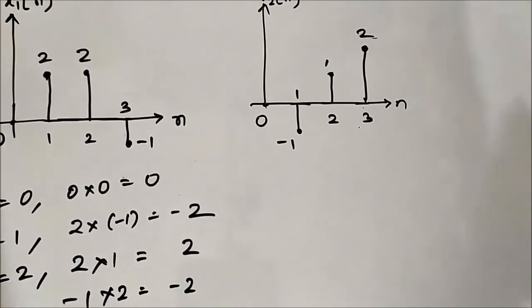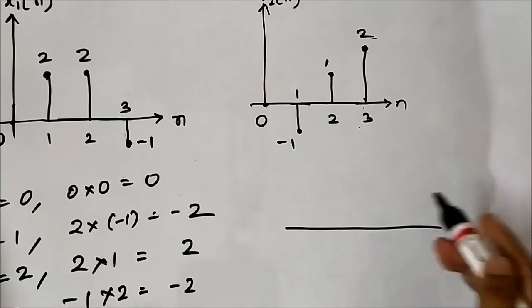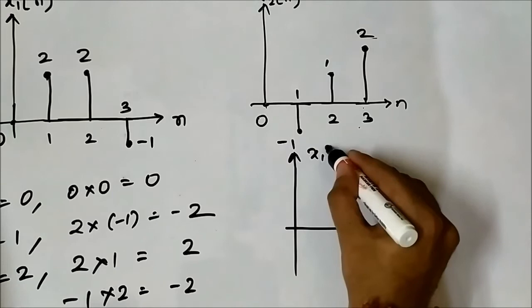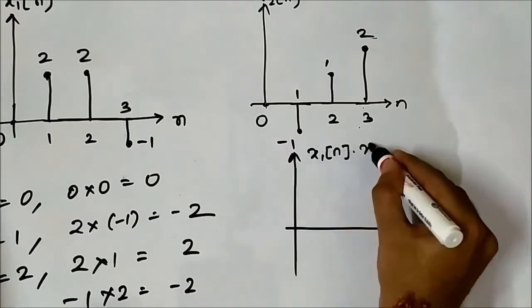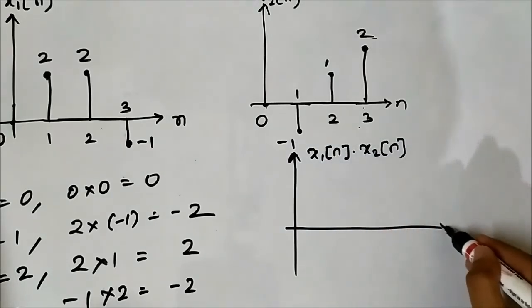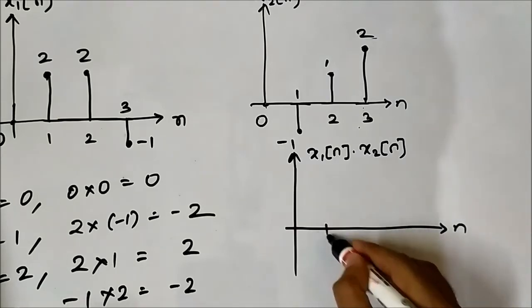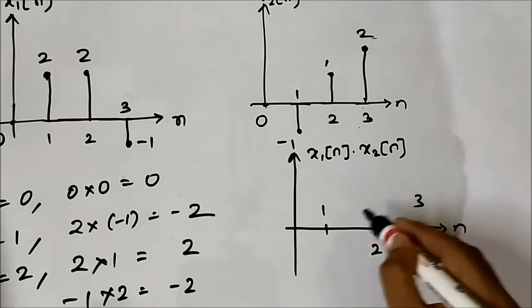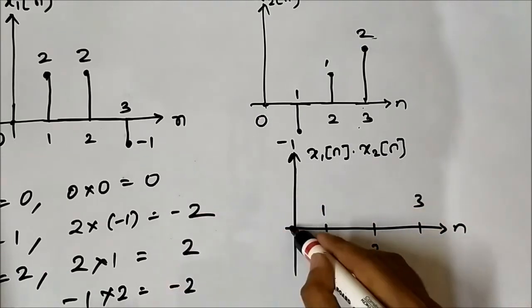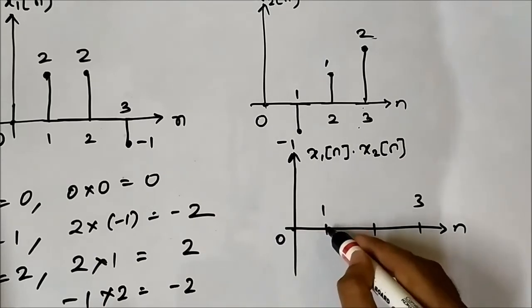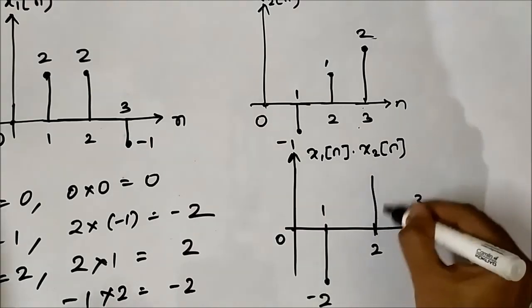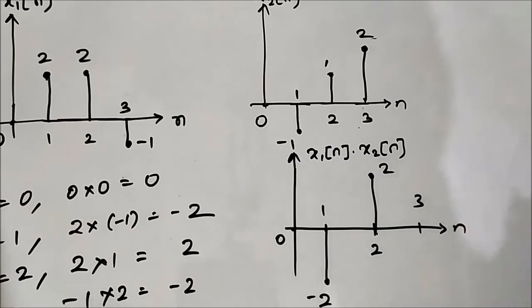So the resultant signal will be x1[n] times x2[n]. At 0 it is 0, at 1 it is -2, at 2 it is plus 2, at 3 it is -2.